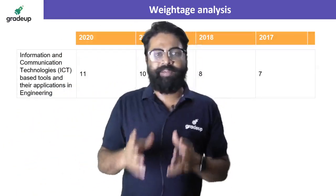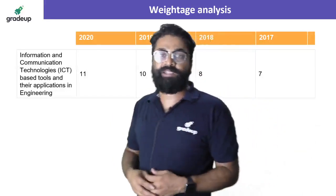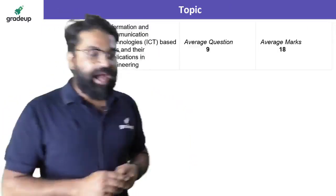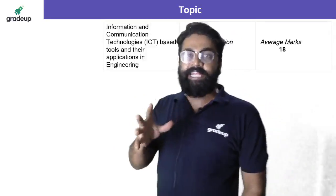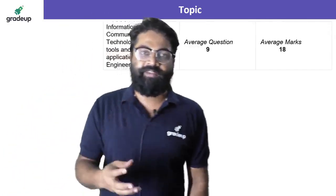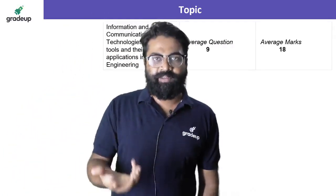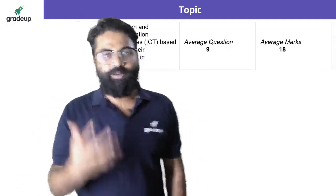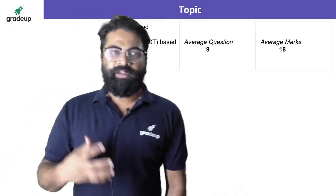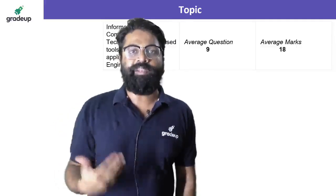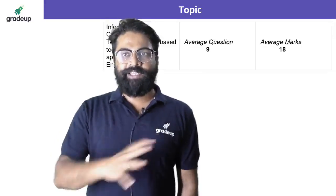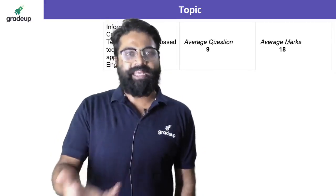Talking about the weightage analysis: in 2017 there were 7 marks, in 2018 — 8 marks, in 2019 — 10 marks, and in 2020 — 11 marks. On average, ICT gives you about 9 questions, which means 18 marks. Based on this average mark analysis, you can understand that ICT is one of the important topics in your ESE prelims.